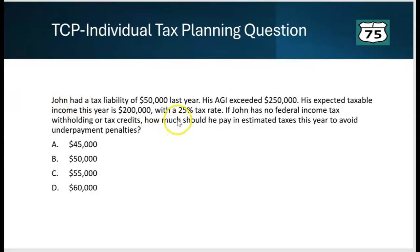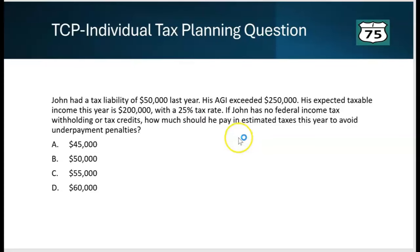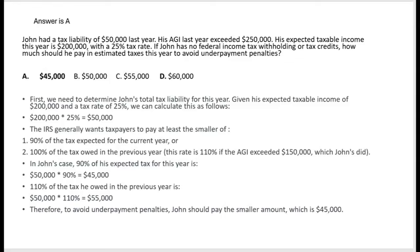Our first question is on individual tax planning. John had a tax liability of $50,000 last year; his AGI exceeded $250,000. His expected taxable income this year is $200,000 with a 25% tax rate. If John has no federal income tax withholding or tax credits, how much should he pay in estimated taxes this year to avoid underpayment penalties? The answer is A: $45,000. First, we estimate his total tax this year: $200,000 × 25% = $50,000.